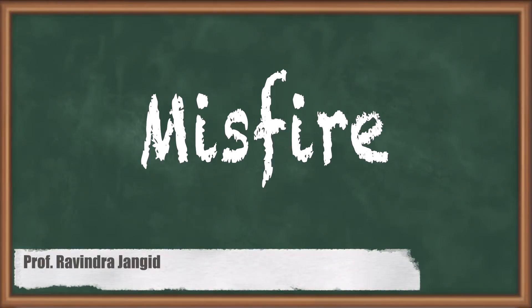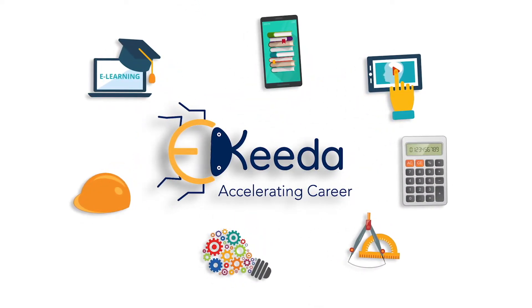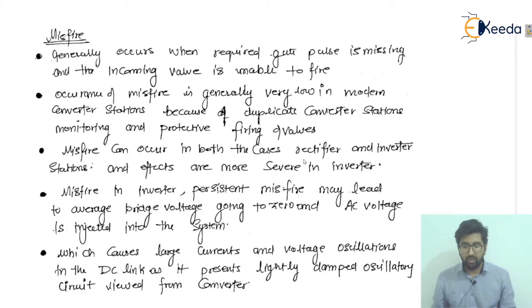Welcome to Egheta platform. This is Ravin Jagad, your electrical faculty. In this video I'm going to talk about the misfire, which is another malfunction in HVDC systems. The misfire is kind of similar to commutation failure and arc through — these three are all related malfunctions. We will discuss exactly what the misfire is.